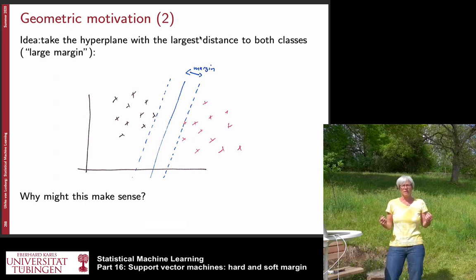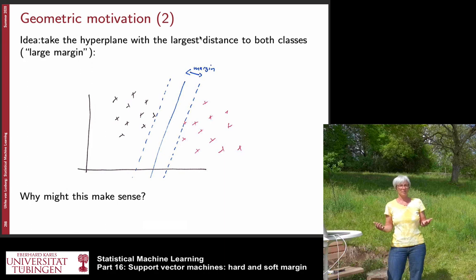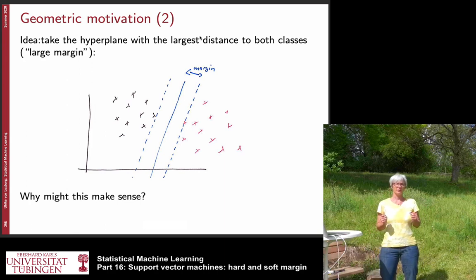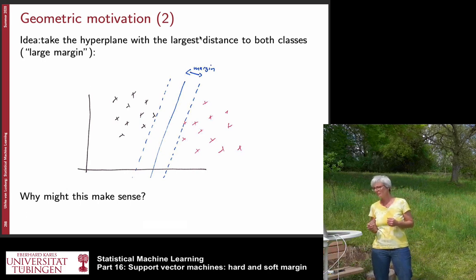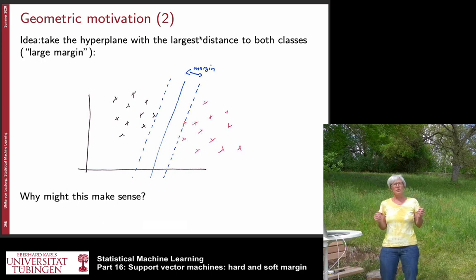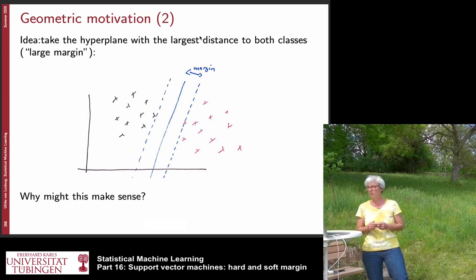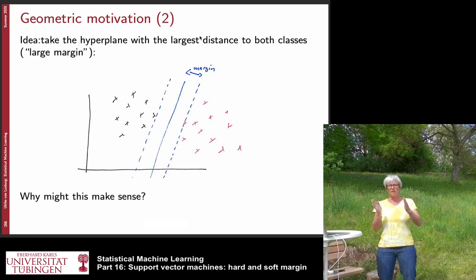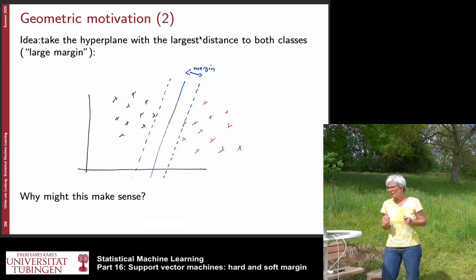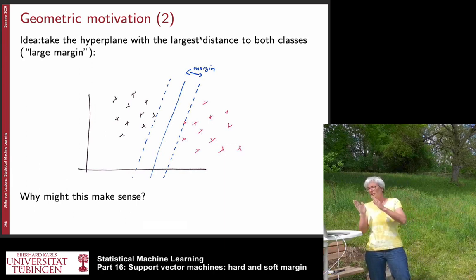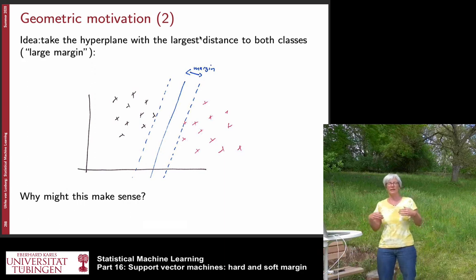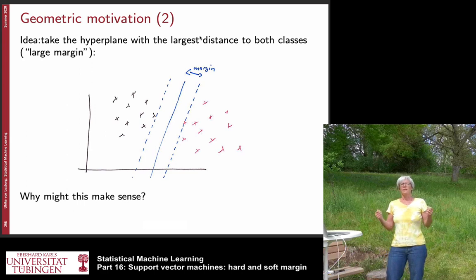The main idea of SVMs from a geometric point of view is the margin. If we have a data set that is perfectly separable by a hyperplane, there are often many hyperplanes that can separate the data. What we do is consider the margin: we draw parallel lines to the hyperplane and go as far as we can before touching a point. We want to find a hyperplane that has as large a margin as possible.